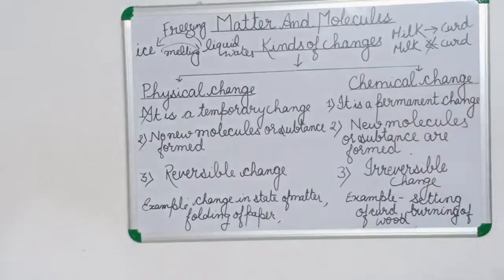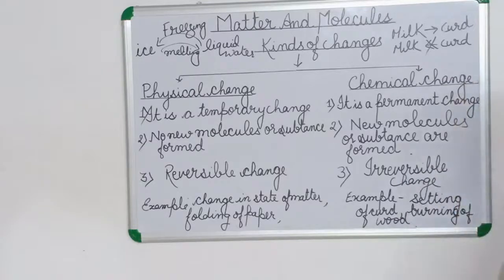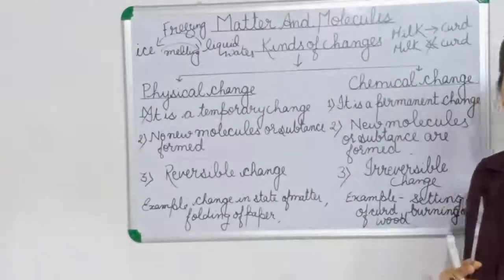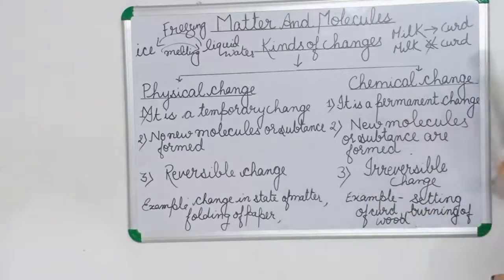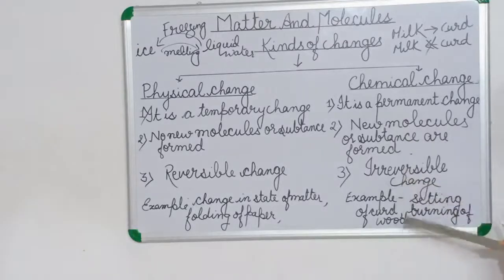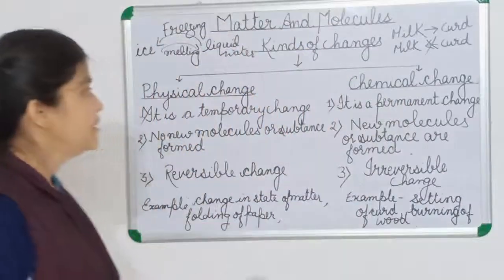Second is chemical change: it is a permanent change, new molecules or substances are formed, and it is irreversible — it will not go in a backward direction. Once a new substance forms, we cannot convert it back to the old substance. Examples include setting of curd, burning of wood, burning of crackers, and burning of paper.